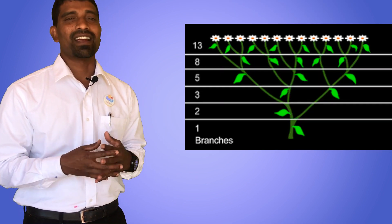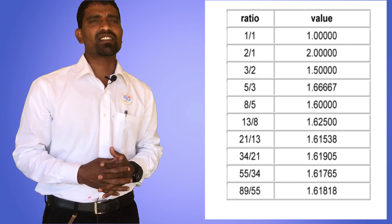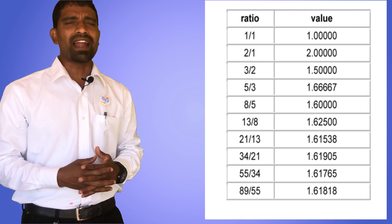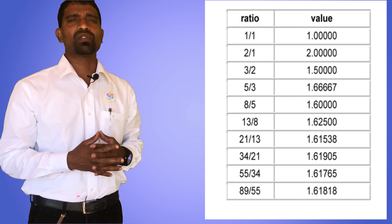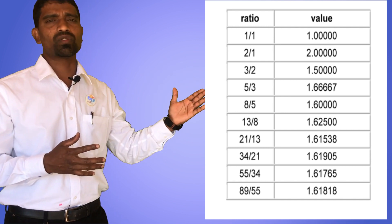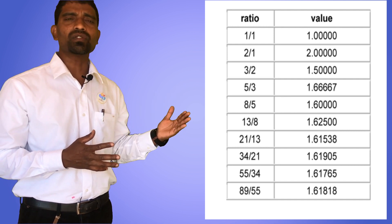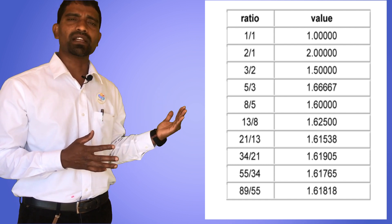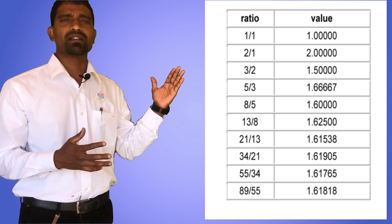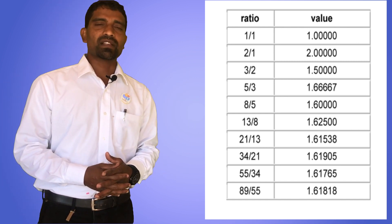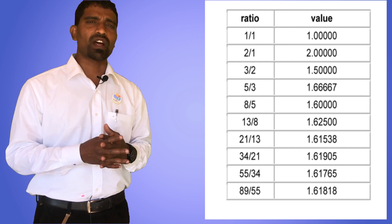This isn't the part which blows your mind — it is yet to come. Let's keep playing with the Fibonacci sequence. This time we shall change the rule of the game. Instead of adding consecutive numbers, we shall divide the next number by the previous number. One by one equals one. Two by one equals two. Three by two equals 1.5. Five by three equals 1.666. Eight by five equals 1.6. As we go through the Fibonacci sequence doing these divisions, we'll come across a ratio equal to 1.618.